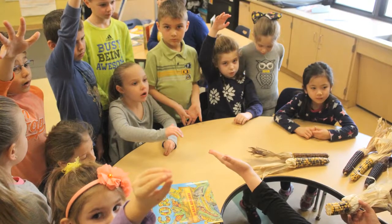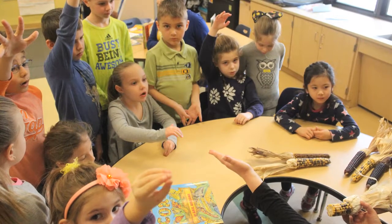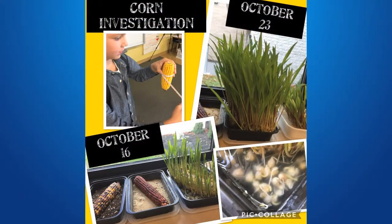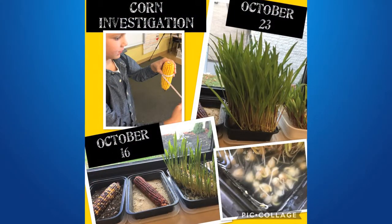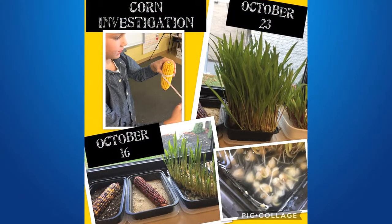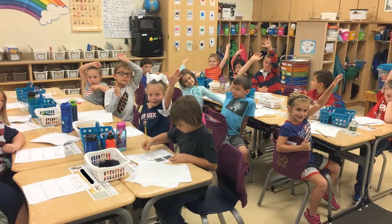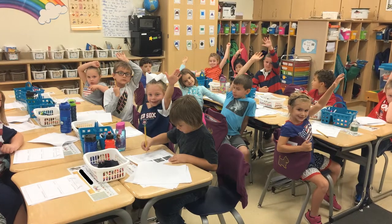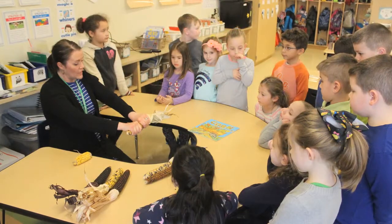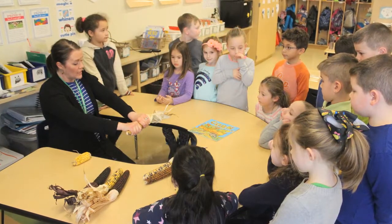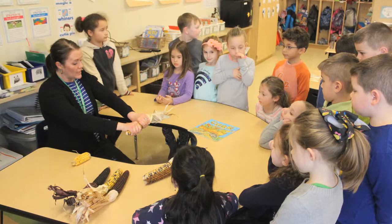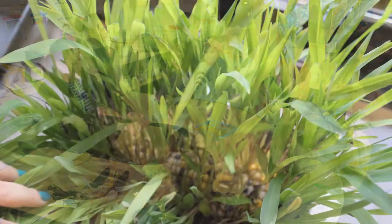They labeled a diagram of corn and made a corn lifecycle wheel. The class learned about the delicate pollination process of corn. They completed a science experiment which allowed the class to isolate different variables to determine which environment would be best for sprouting corn.